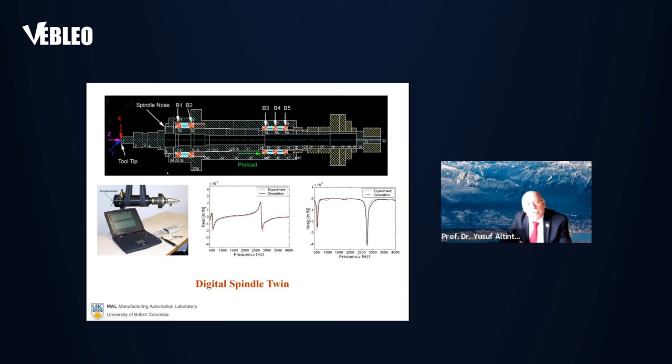Once we are able to predict the dynamic behavior of the spindle accurately, then we can cut digitally with this digital spindle before manufacturing the spindle. This way, the designer can modify the spindle dimensions and the bearing locations to make sure that the spindle operates, for example, at 30,000 revolutions per minute.